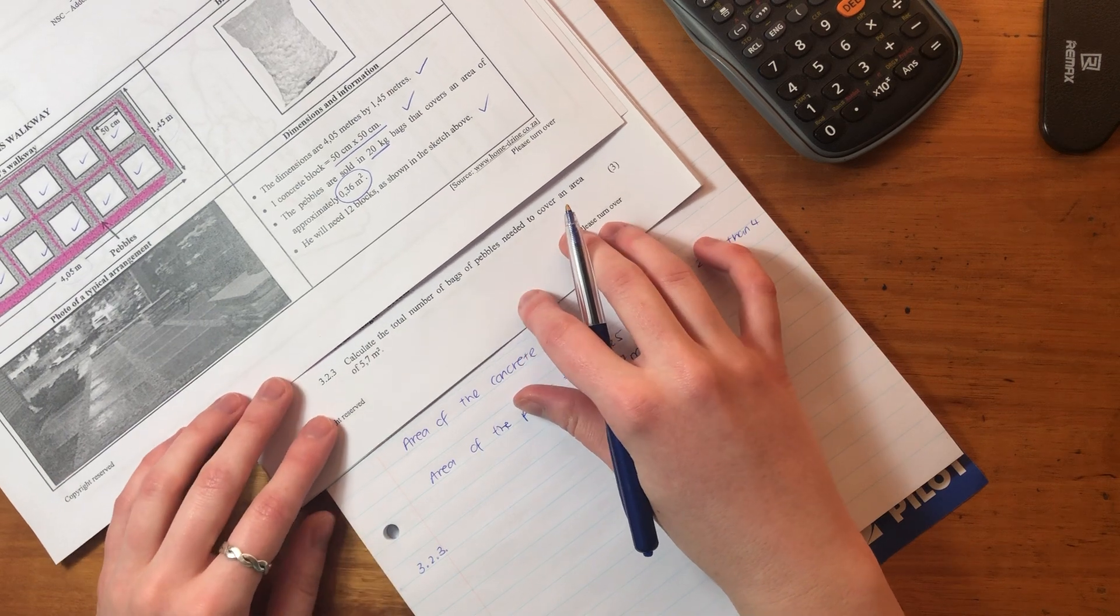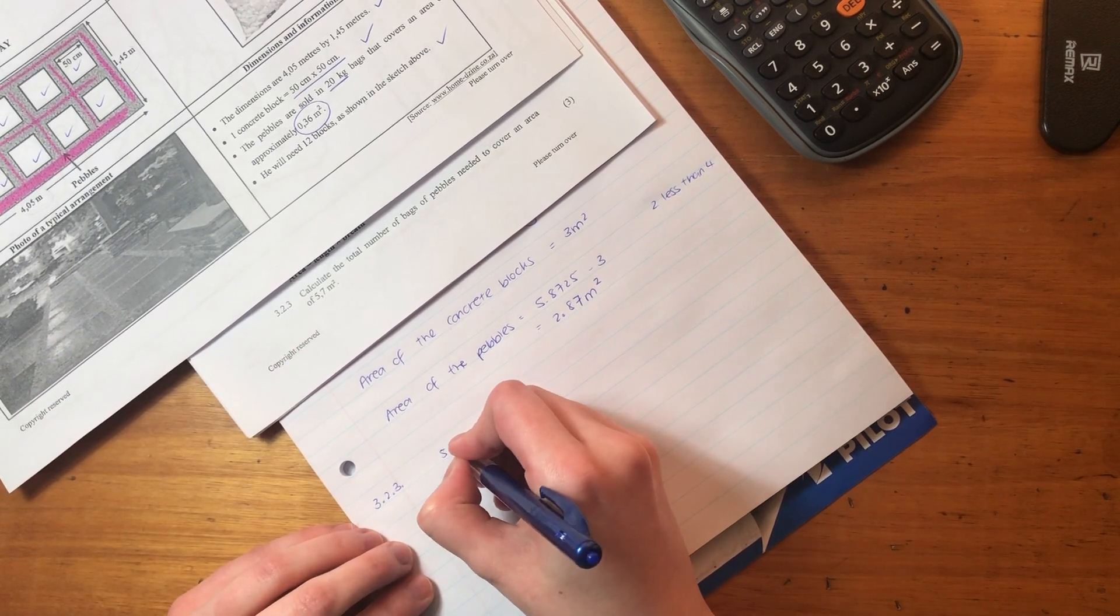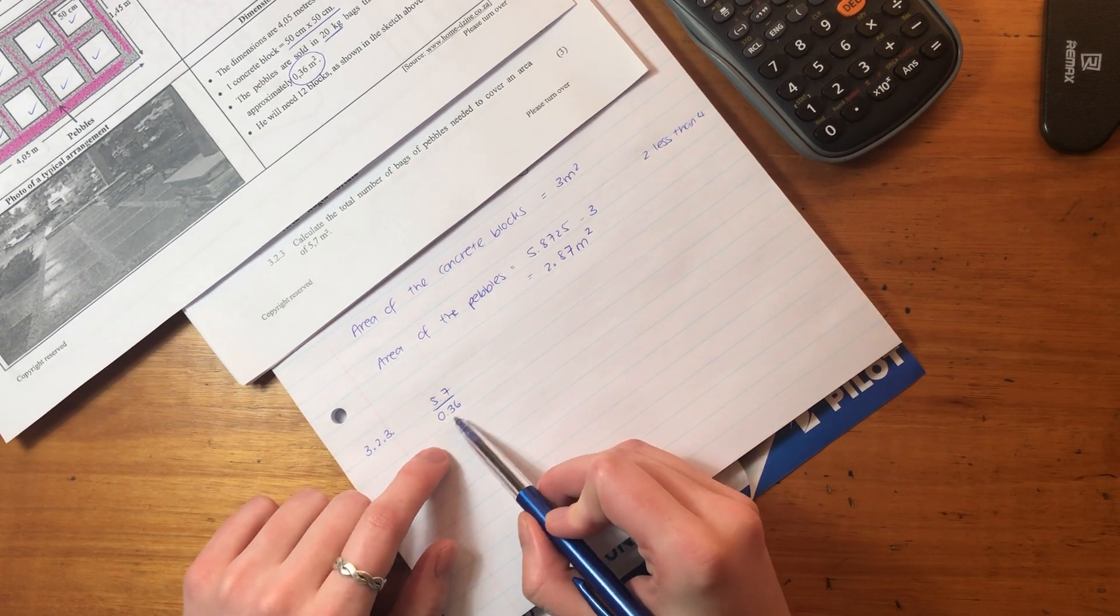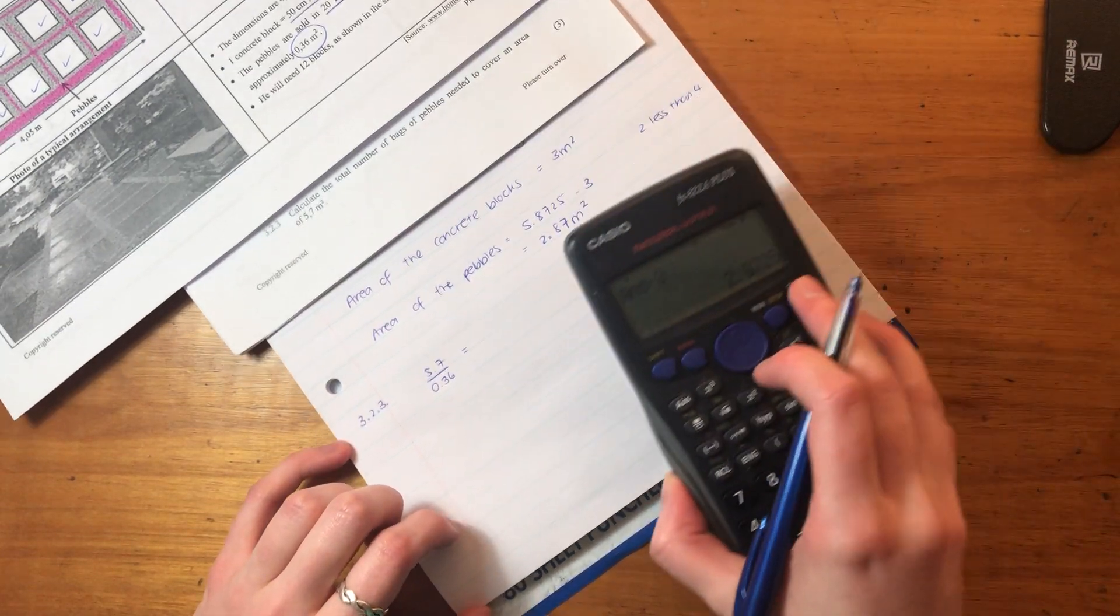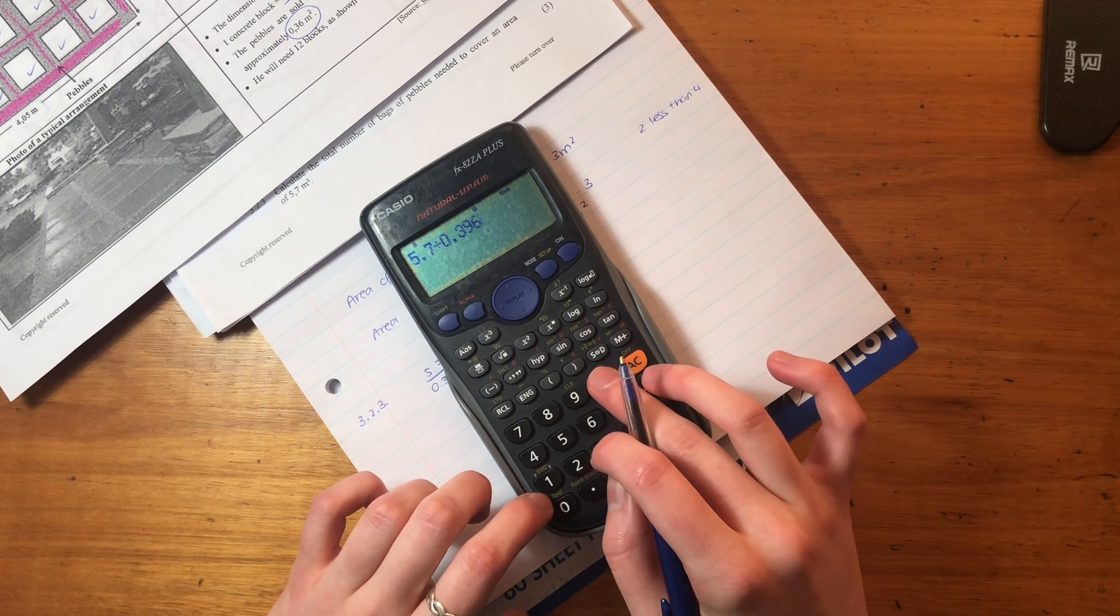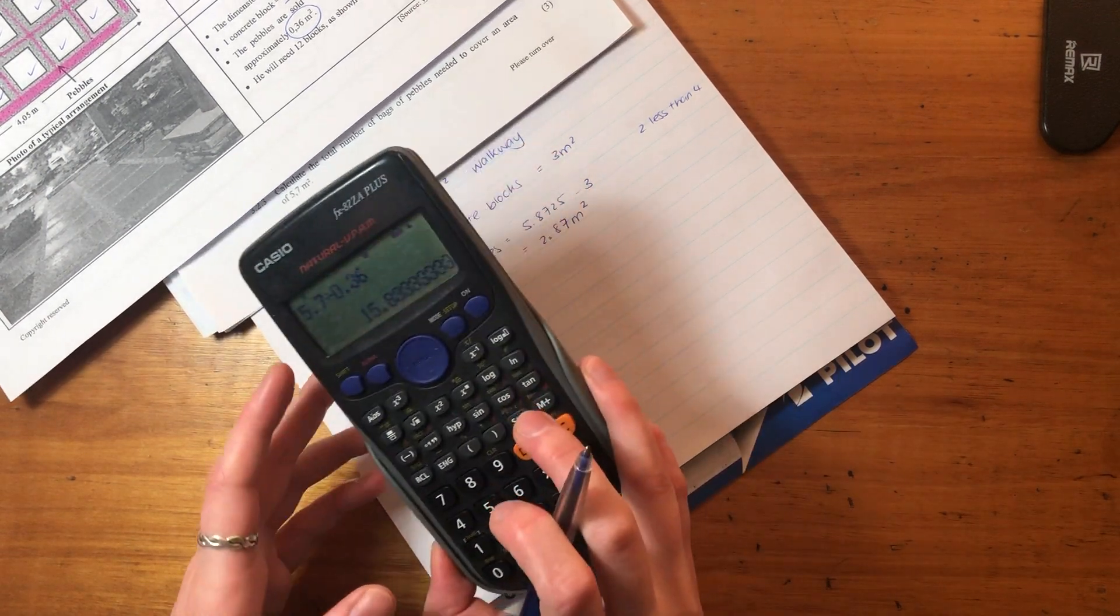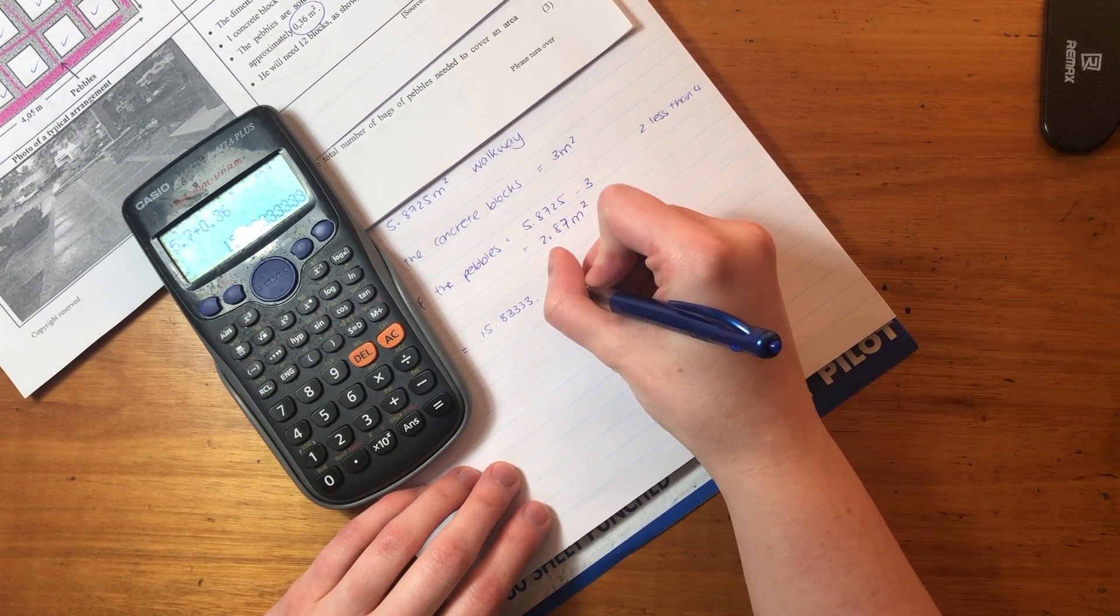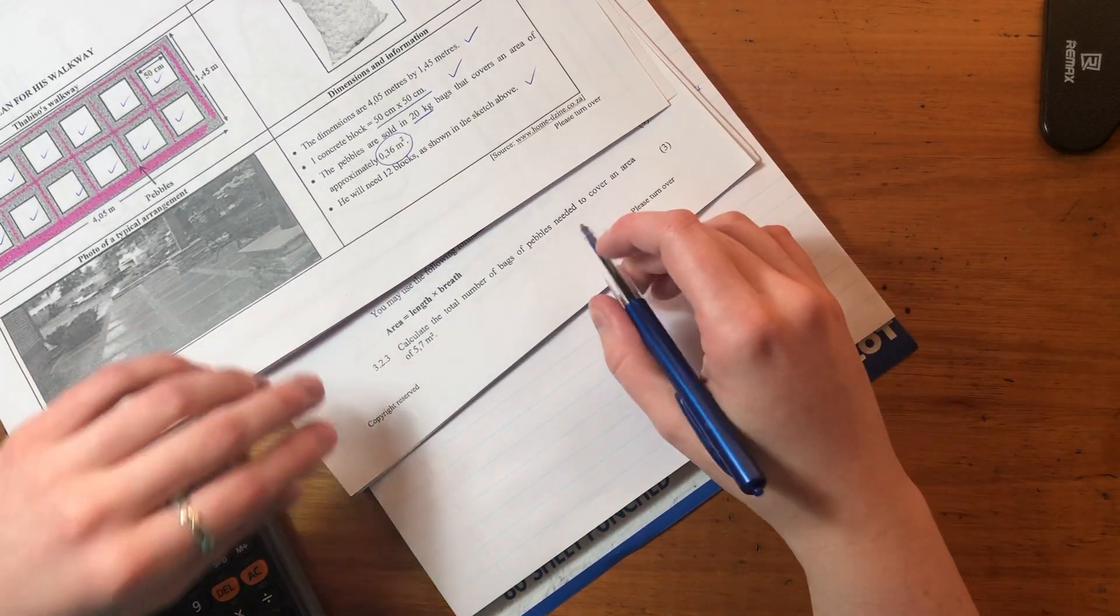So what we're going to say in order to calculate the total number of bags of pebbles needed to cover the area of 5.7, we're going to say the area of 5.7 divided by 0.36. Because we're saying, 0.36 is the amount in a bag. If we say the total area divided by the amount in the bag, it's going to give us the number of bags we're going to need. So let's put that into our calculator. 5.7 divided by 0.36. Very important that we make sure that we input things correctly. And it tells me that it is 15.8333 forever ever. That's how many bags I need.